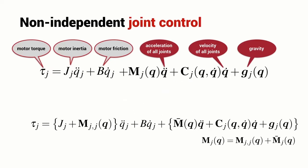I can do a little bit of rearrangement now and what we have now is an expression for the torque acting on joint J in terms of the motor's own inertia and the component of the inertia matrix associated with this joint.